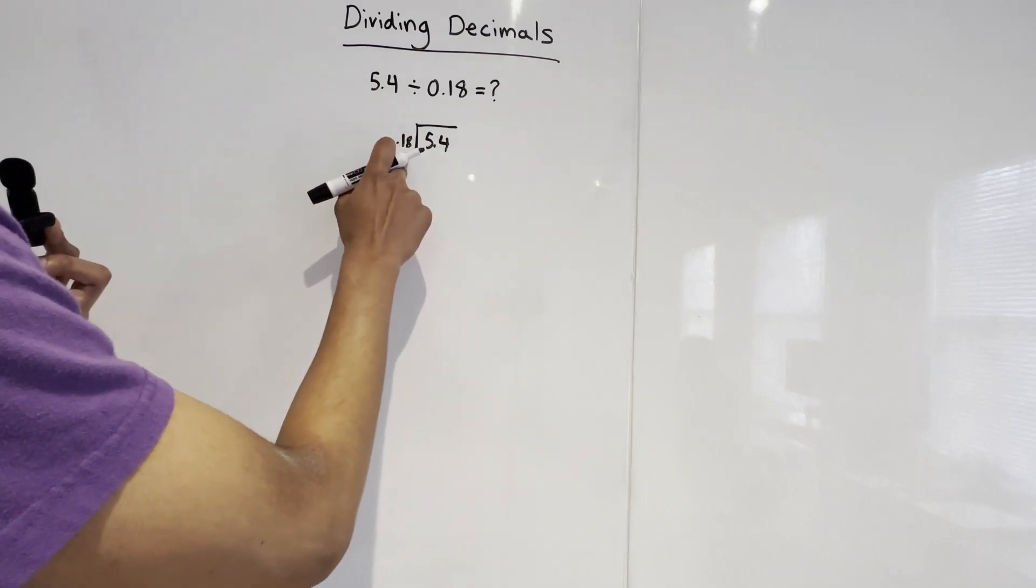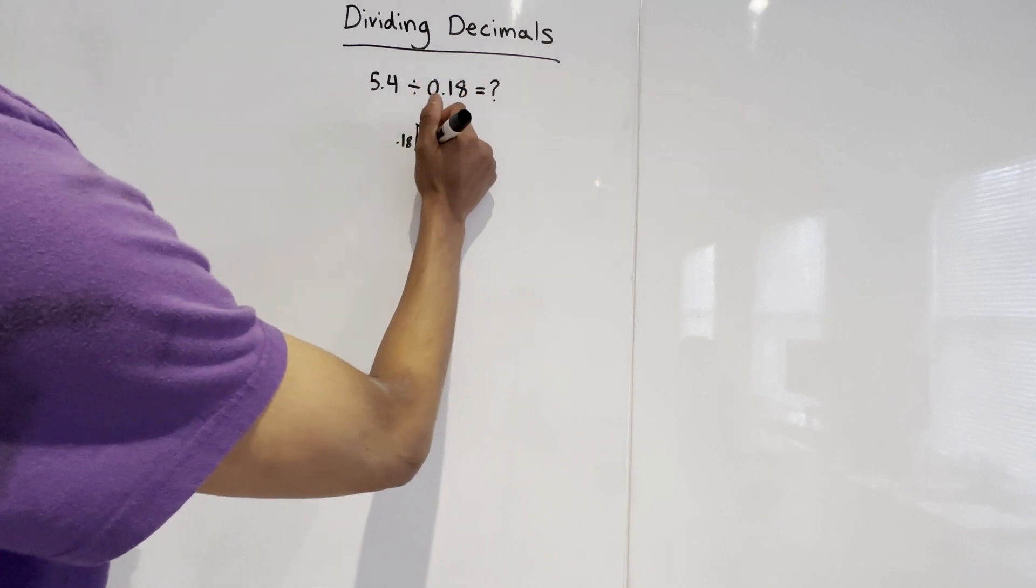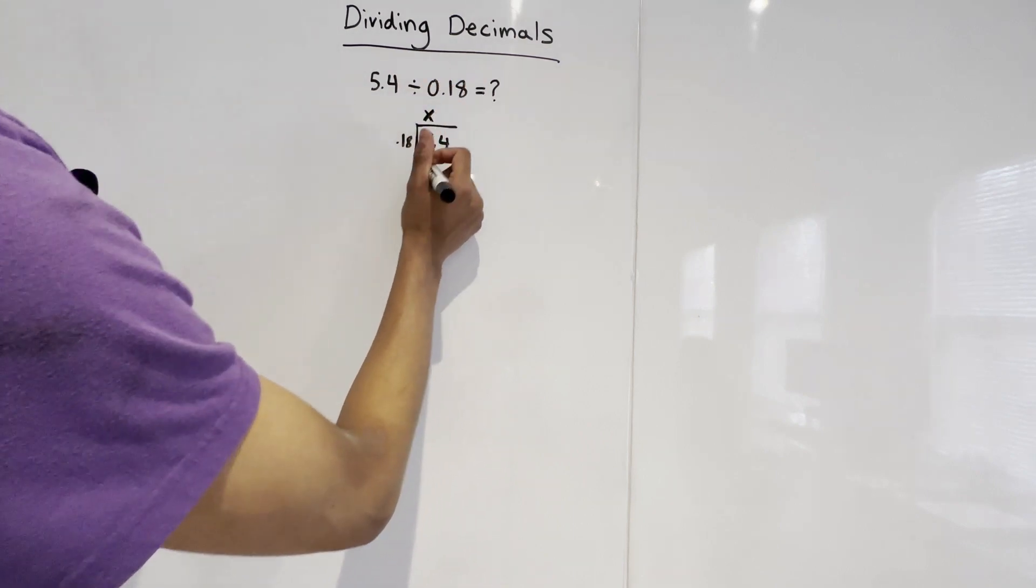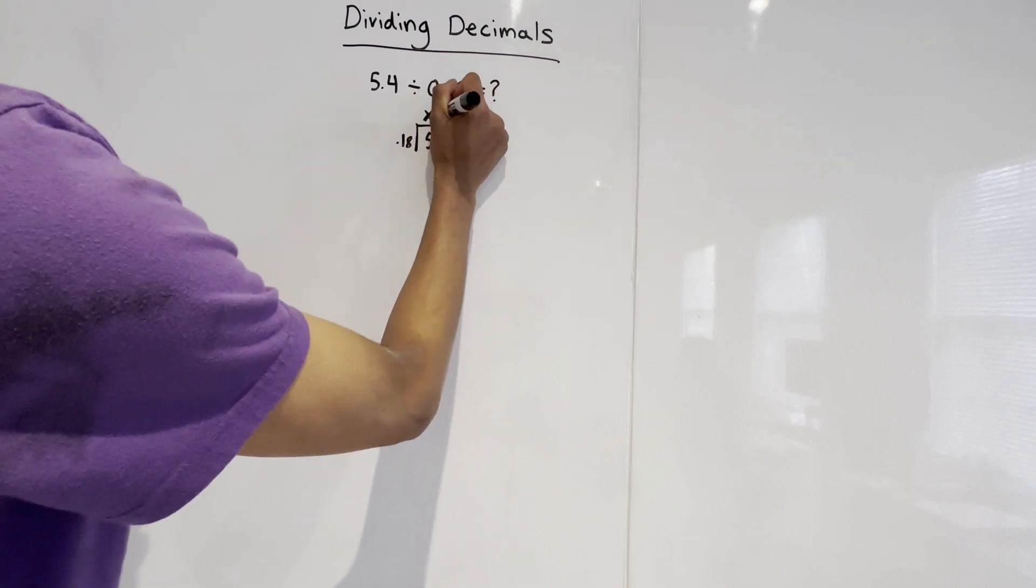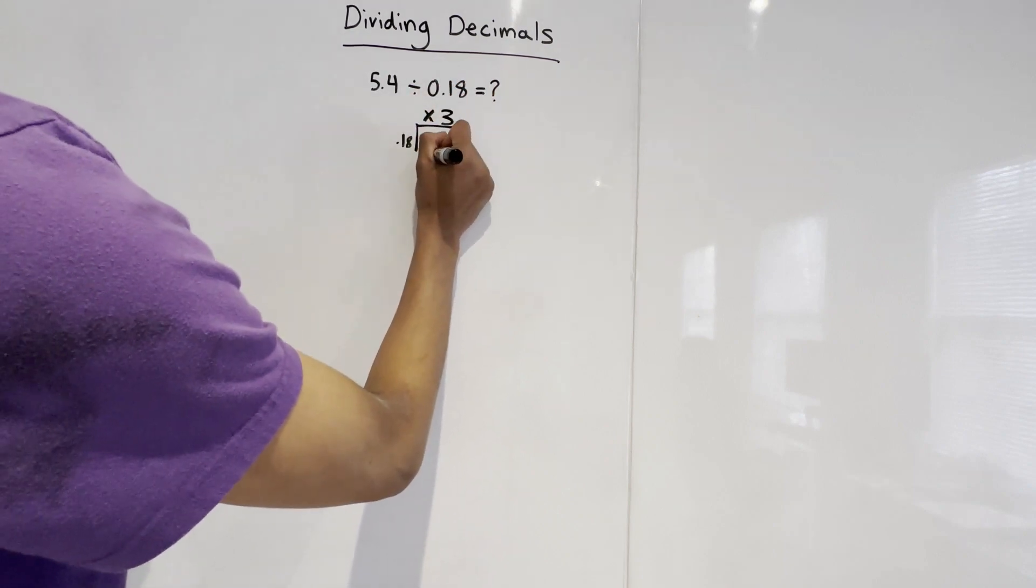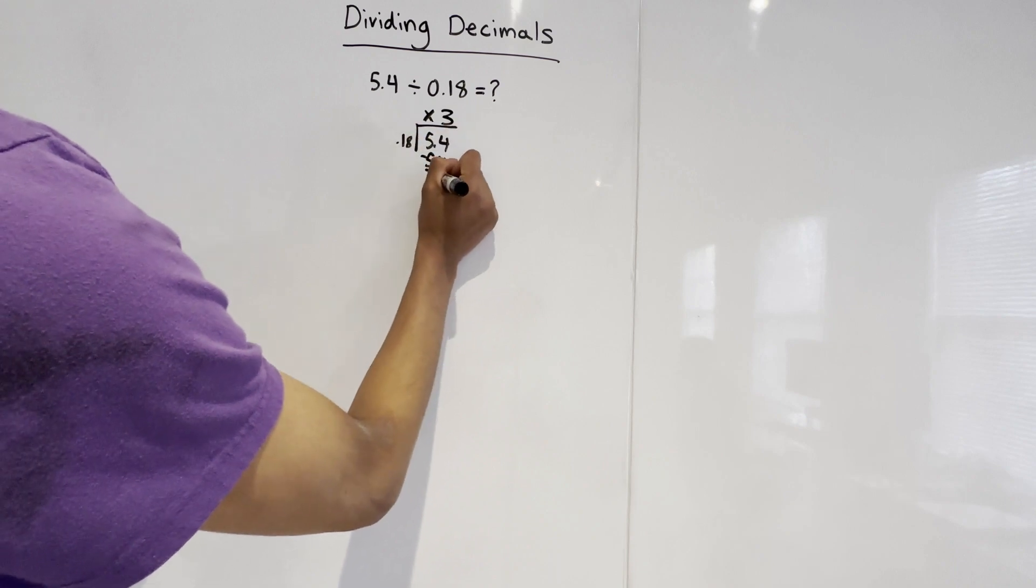So 54 divided by 18. We can't divide 5 by 18, so we write an x here. And then we add the 4. So 54 divided by 18, that's 3. So 54 minus 54 is 0. We have a remainder of 0.